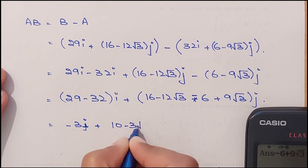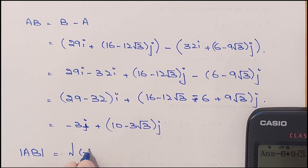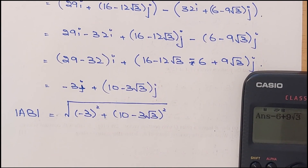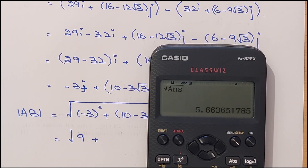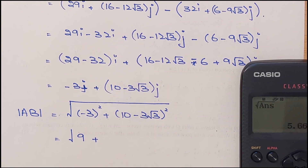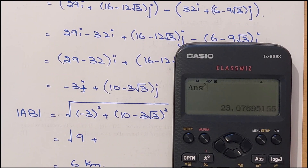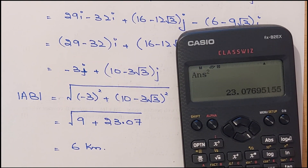Expanding: 29 − 32 = −3 for the I component. For the J component: 16 − 12√3 − 6 + 9√3 = 10 − 3√3. So AB = −3I + (10 − 3√3)J. The distance is the magnitude: √((−3)² + (10 − 3√3)²) = √(9 + 23.07) ≈ 6 kilometers. So the distance AB equals 6 km. That's question number 8 of May/June 2022 paper 21.